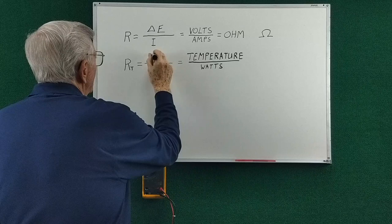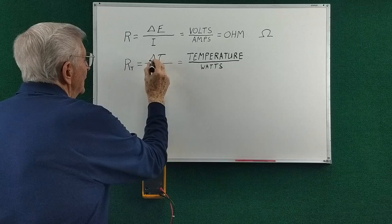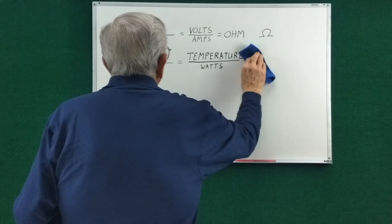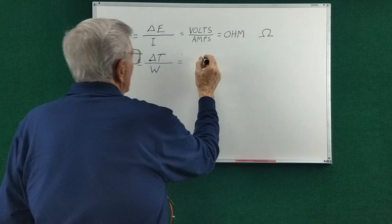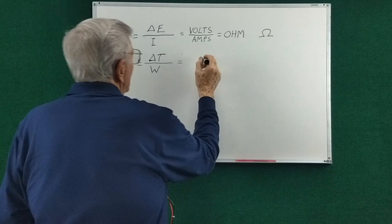And it's usually given in kelvins or degrees C. So let's rewrite this. It's sometimes called kelvins per watt. We can call it delta degrees C per watt.